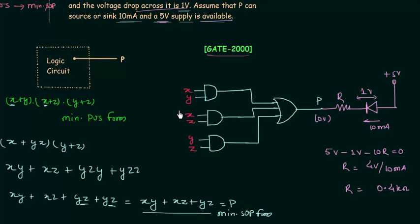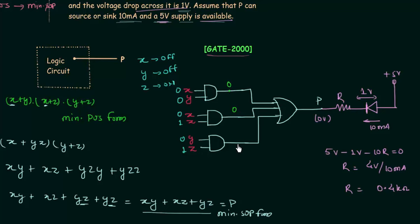When the majority of inputs are low the LED will be on. Cross-checking: if pump X is off, pump Y is off, and pump Z is on — X=0, Y=0, Z=1 — the outputs of all three AND gates are 0, so the OR gate output is 0, meaning P = 0 and the LED glows. This confirms the indicator works correctly when two pumps are failing.